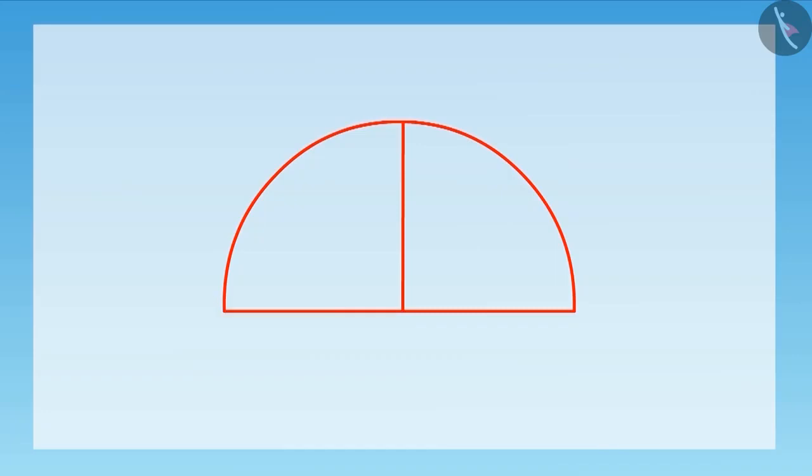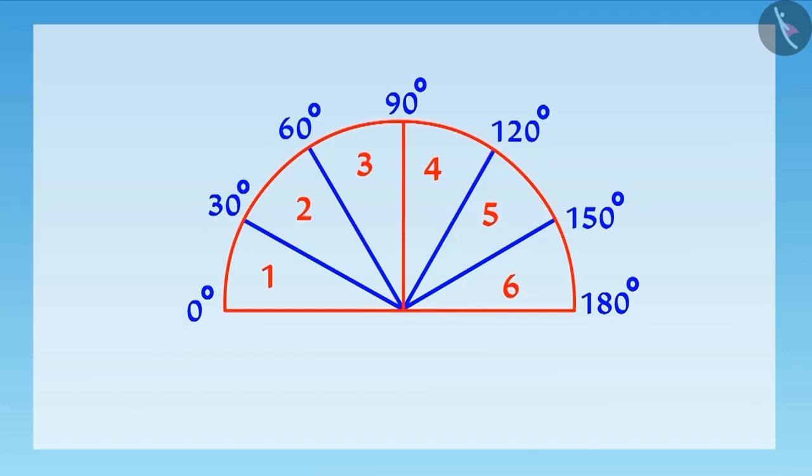Now, divide both the halves of the semicircle into three equal parts. So, there will be a total of six parts of the semicircle. Here, we divide 90 degrees into three equal parts. And hence, the measurement of each part will be 30 degrees.